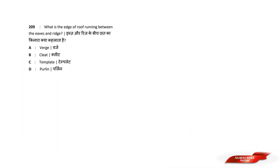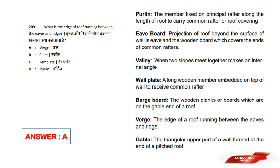What is the edge of a roof running between Eaves to Ridge? Options are: A) Verge, B) Cleat, C) Template, D) Purlin. Answer option A is Verge. The cap on the edge of a roof running between Eaves to Ridge is called Verge. So, answer option A.